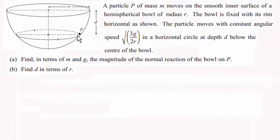Now in this question, we've got this particle P here of mass m, and it moves on the smooth inner surface of this hemispherical bowl of radius r. The bowl is fixed with its rim horizontal. The particle moves with constant angular speed, root 3g over 2r, in a horizontal circle at a depth of d below the centre of the bowl.